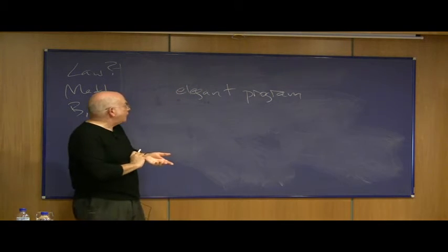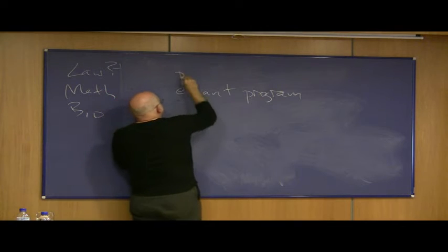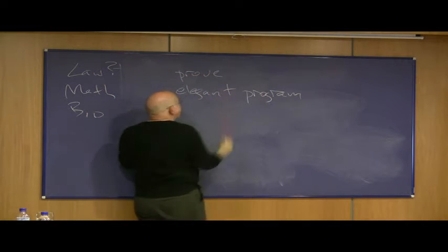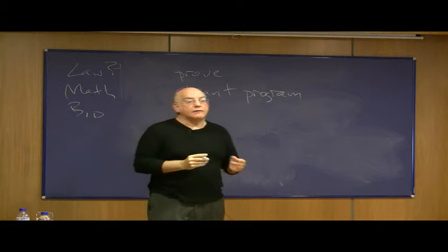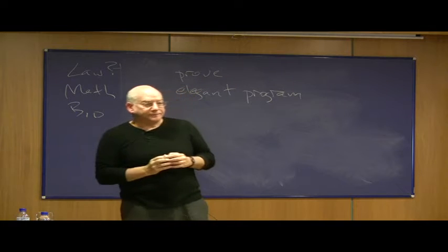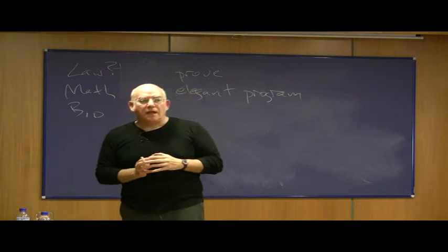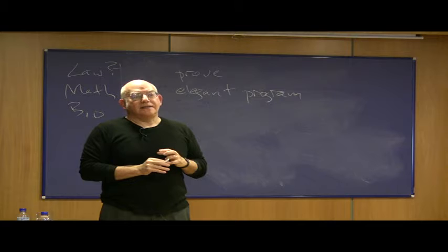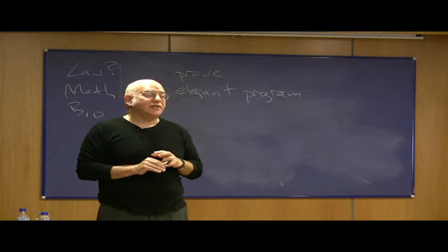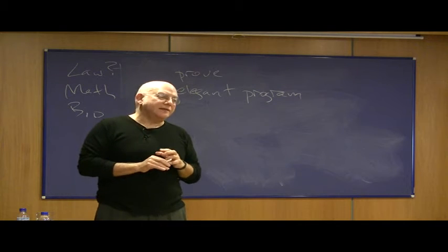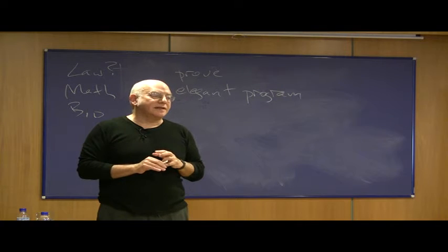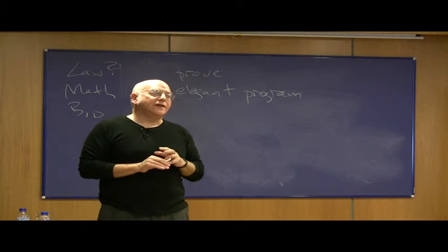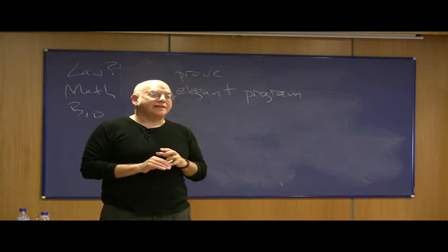So what if I want to use a formal axiomatic theory to prove that a program is elegant? Can I do it? The surprising answer is: almost never. You can actually prove that you can't prove that a program is elegant — in other words, you can prove that you can't prove that you have the best theory.